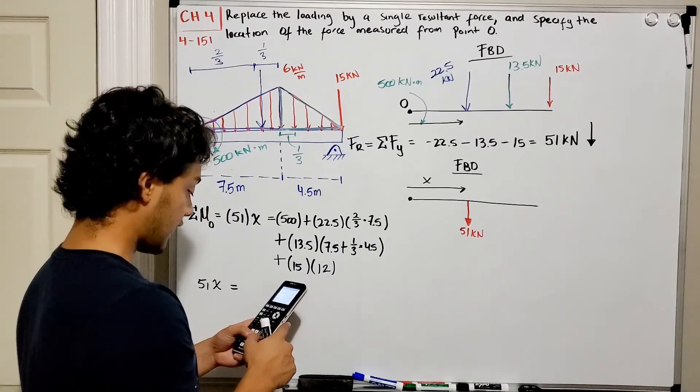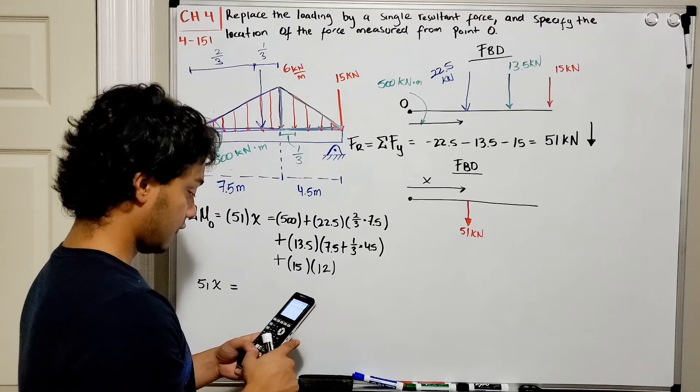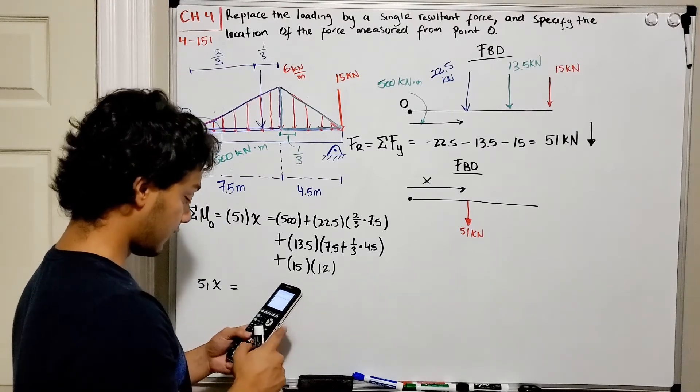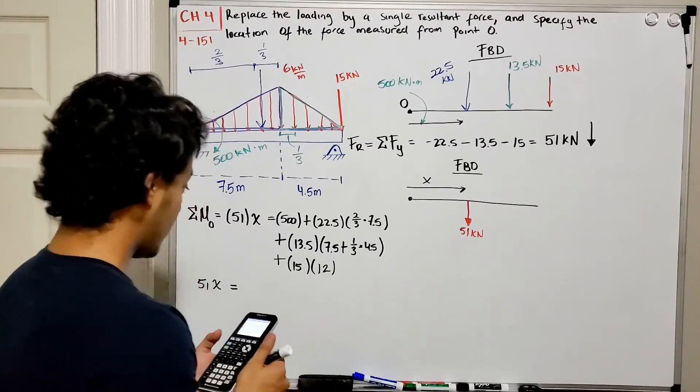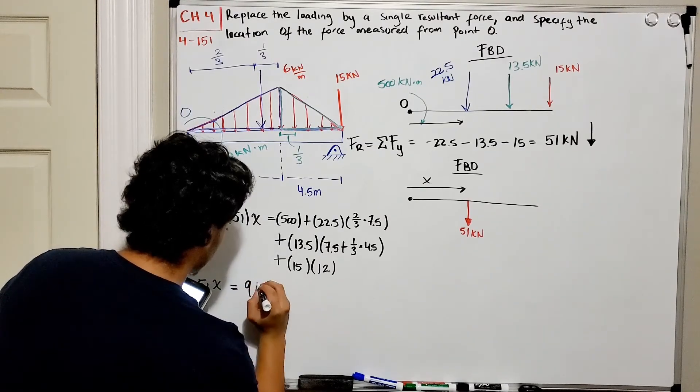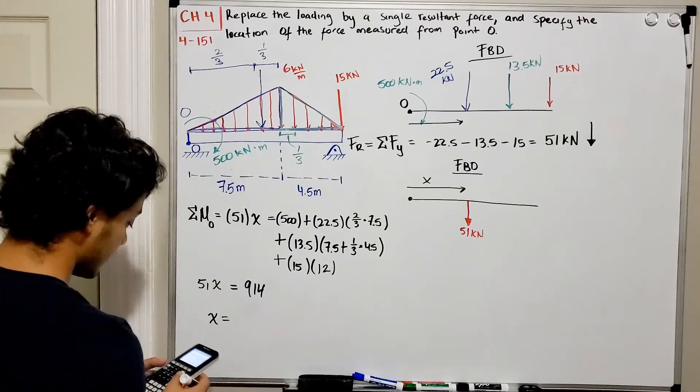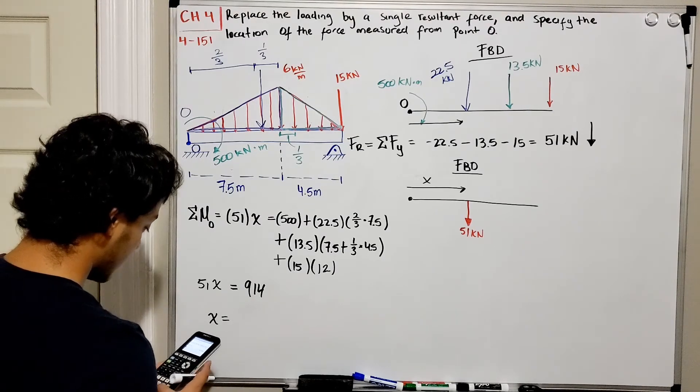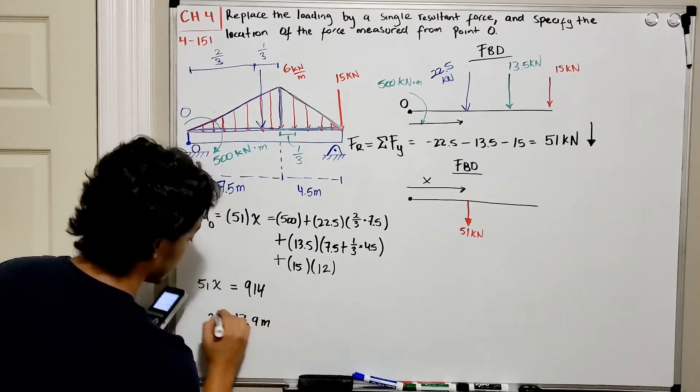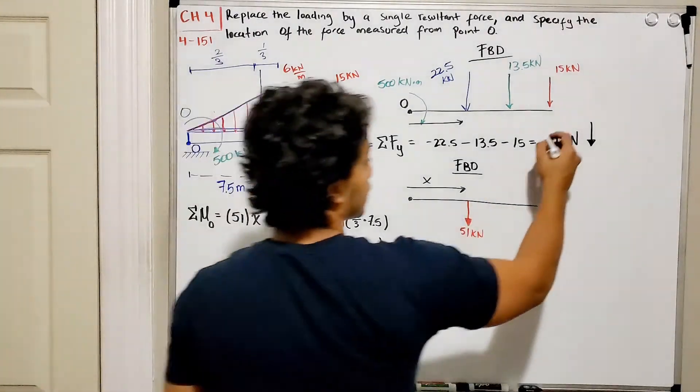Plus 13.5 times 7.5 plus one-third of 4.5, and then plus 15 times 12. And that gives me a total of 914. Now we solve for x. This is going to be 914 divided by 51, and this is a total of 17.9 meters.